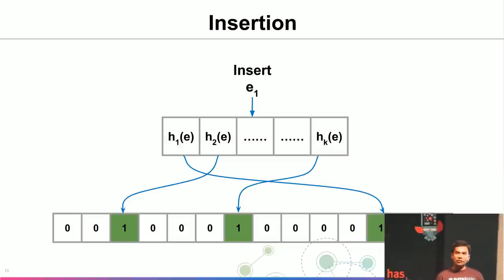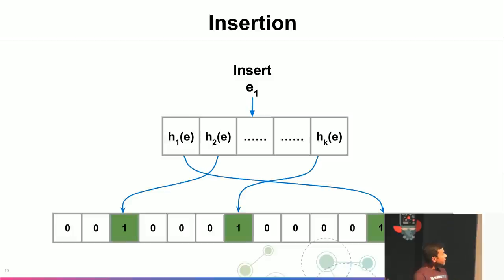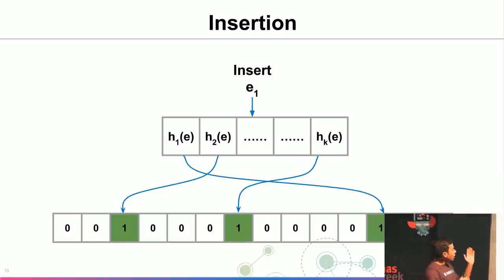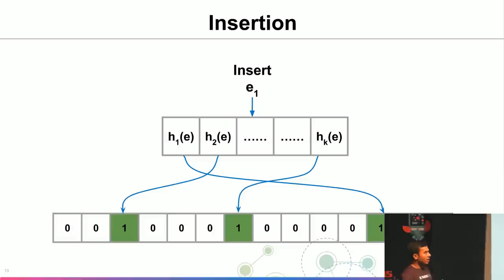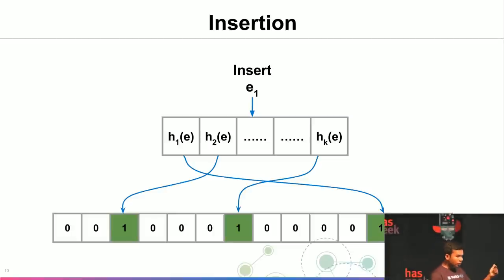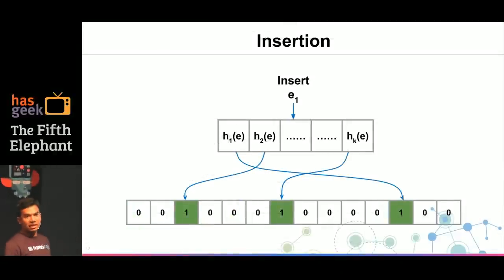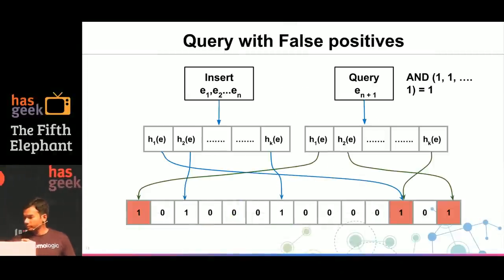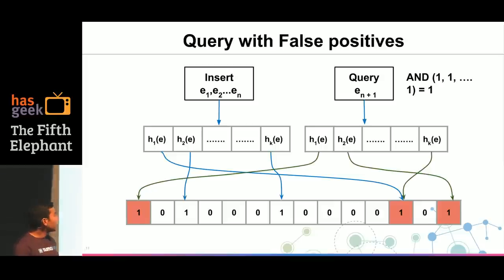The stream contains an operation and a value. For each incoming insert element, it goes through all k hash functions, generating k indices into the bit array. We go to those indices and turn on the bits, recording that this element is present in the set. Importantly, we are not storing the element itself — just the information that it is present. After inserting n elements, many bits get turned on.